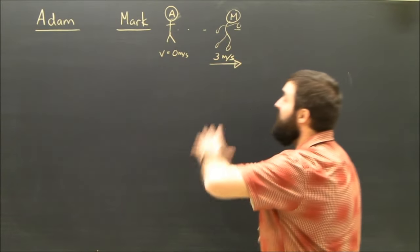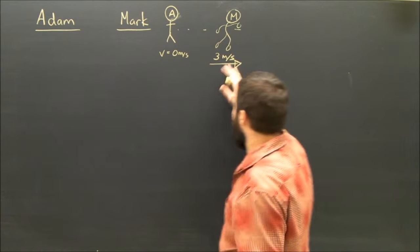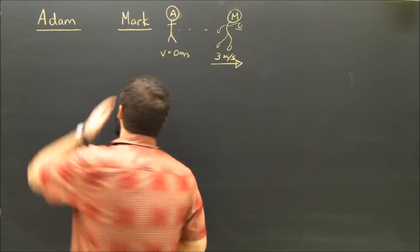Okay, so you've read the question. We've got Adam and he's chasing Mark. Mark is running at a constant velocity of 3.